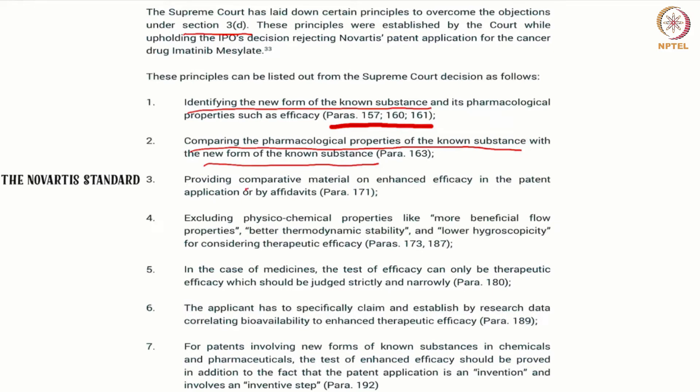The third step involves providing comparative material on enhanced efficacy. This is an obligation on the patent applicant — the applicant has to show comparative material on enhanced efficacy. If the applicant claims that the new form has enhanced efficacy, the applicant has to demonstrate that by producing material.